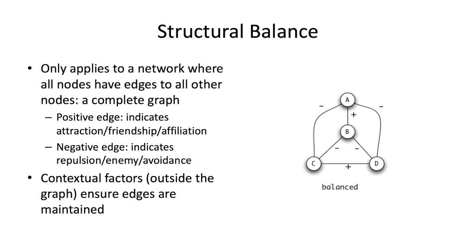So structural balance is this idea that we have a network graph and the edges in that graph represent positive or negative relationships. Structural balance is the sense in which the network itself is not in tension. A positive edge in one of these types of graphs indicates an attraction. Sometimes we would call that a friendship or affiliation, meaning you sort of cling together.